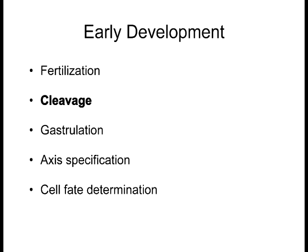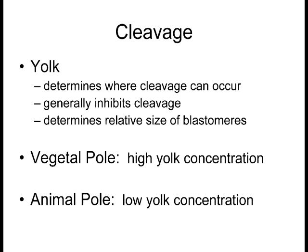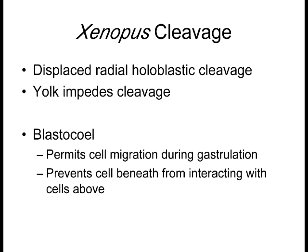Now cleavage — this will be partly a recap. You already know that yolk in various organisms inhibits where cleavage occurs. For our model organisms, it affects three out of four. In mammals there really isn't any yolk, so cleavage is holoblastic and divides all cells evenly. For frog, fish, and chickens there are fundamental differences. In Xenopus, the animal pole has low yolk and the vegetal pole has high yolk concentration. Its mode of cleavage is displaced radial holoblastic cleavage.